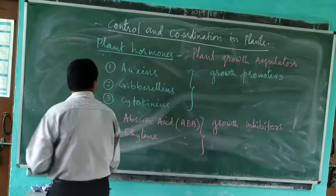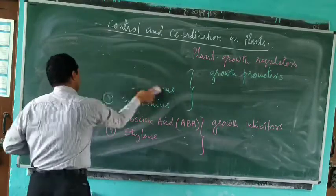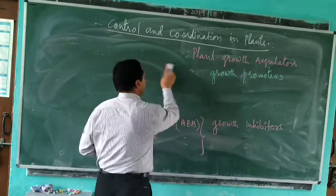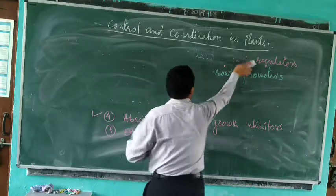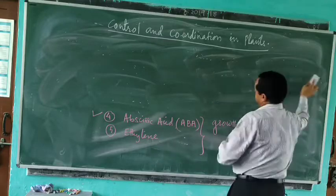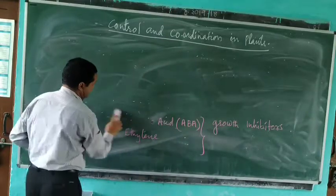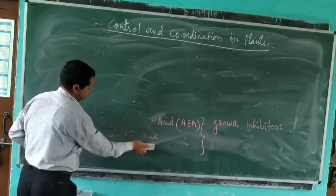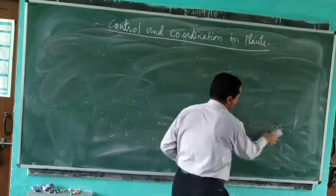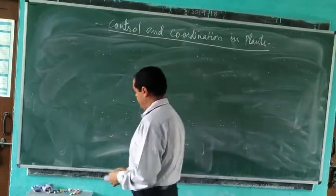Now, students, in plants there are two types of movements. Plants also show certain kinds of movements. There are two types: movement independent of growth, and movement dependent on growth.